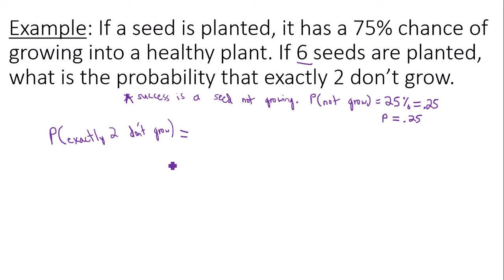So in Google Sheets, I have to put the following information in. First I need to do my total number of trials, total number of seeds planted, six. Probability of a success, the probability of a success that one seed doesn't grow is going to be 0.25, and then I need to type in a lower bound and then the upper bound.